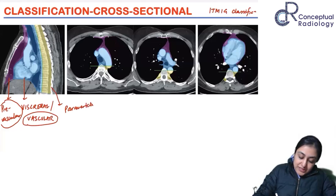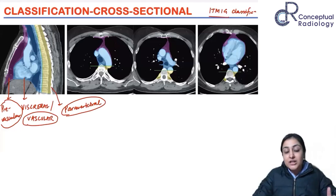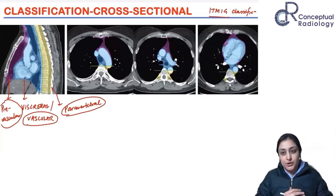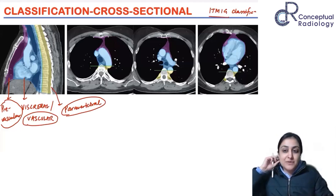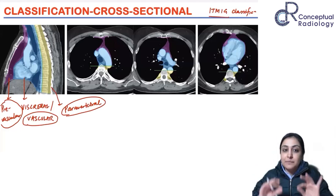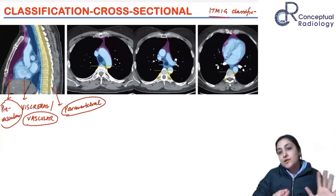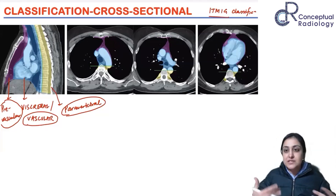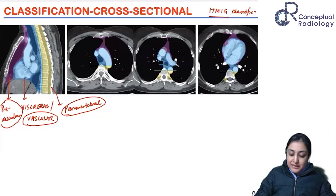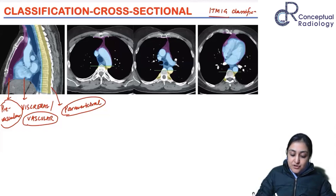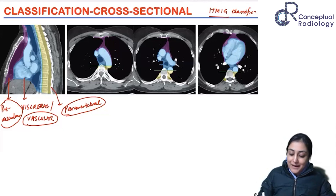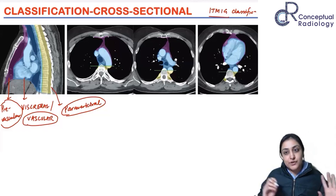You need to know the three ITMIG compartments: prevascular, visceral, and paravertebral. Remember, ITMIG was not described on X-ray — it was developed for cross-sectional imaging, mainly CT — but we extrapolate it for X-ray classification, similar to how the Bosniak classification for renal cysts was described on CT but adopted for ultrasound. The thymus is mainly in the prevascular space; the heart and great vessels are in the visceral compartment; the descending aorta and paravertebral area are in the paravertebral space.